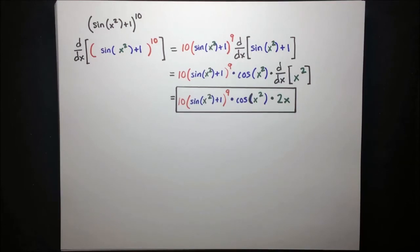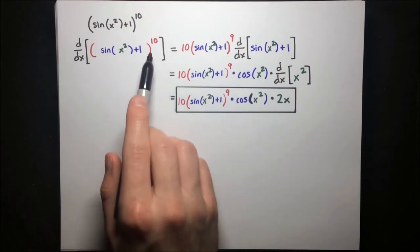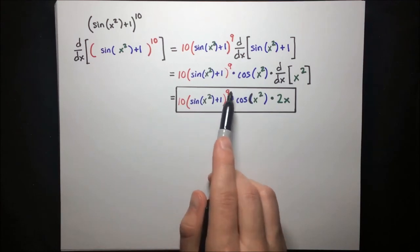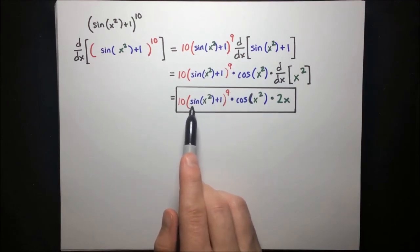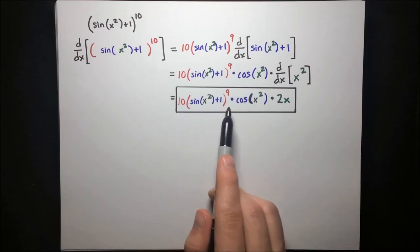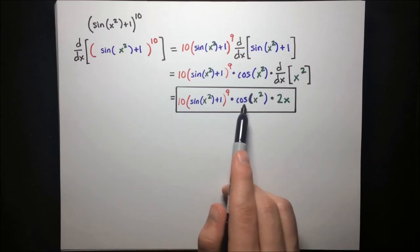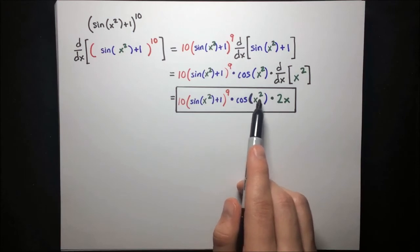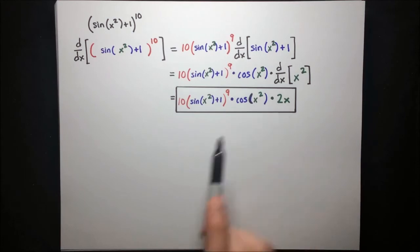Once you practice the peeling the onion technique a few times, you'll get to the stage where you can do this all in one step. First differentiate the outer layer — the tenth power — giving 10 times the inner stuff to the ninth. Then take the derivative of the next layer, sine plus 1, which is cosine, and fill in the inner stuff. Finally, the innermost layer is x squared, and its derivative is 2x. It's like peeling an onion one layer at a time.